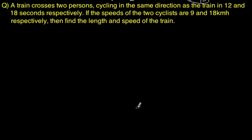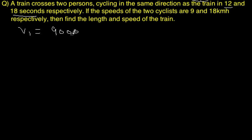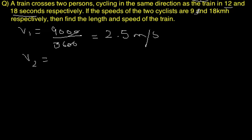Now we will look at a question using this concept. A train crosses two persons cycling in the same direction as the train in 12 and 18 seconds respectively. The speeds of the two cyclists are 9 and 18 km/h. Find the length and speed of the train. Since time is in seconds, we convert cyclist speeds to m/s: 9 km/h = 2.5 m/s, and 18 km/h = 5 m/s.